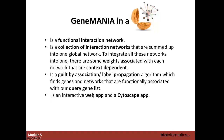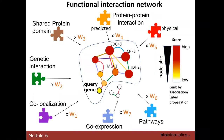GeneMania is available as a web app or as a Cytoscape app, and we are going to show you both options today. The different network types — represented like puzzle pieces — include protein-protein interaction, shared protein domain, genetic interaction, co-localization, co-expression, and pathway. Each network has a weight, and all of these are combined into a global network. Edges represent these different networks and are colored by different colors depending on the network type.